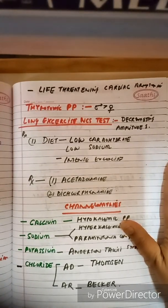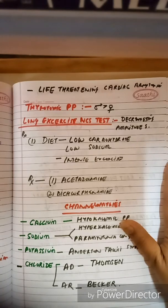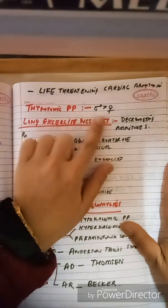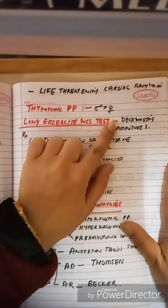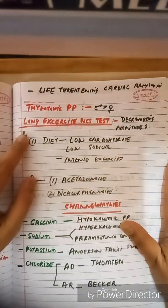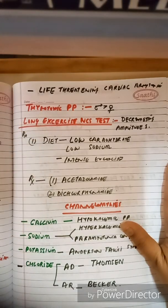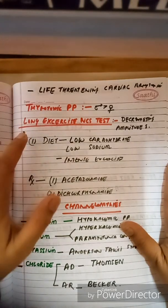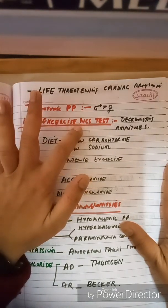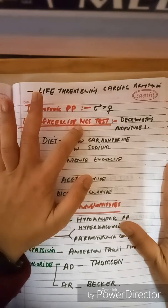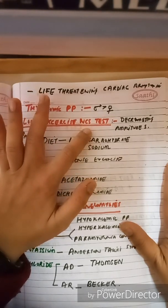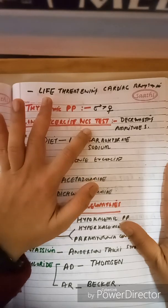Regarding thyrotoxic periodic paralysis: thyrotoxicosis is very common in females, but thyrotoxic periodic paralysis is more common in males — remember males are more commonly affected than females. In hypokalemic periodic paralysis, if a nerve conduction test is done after long exercise, it will show decreasing amplitude of CMAPs.